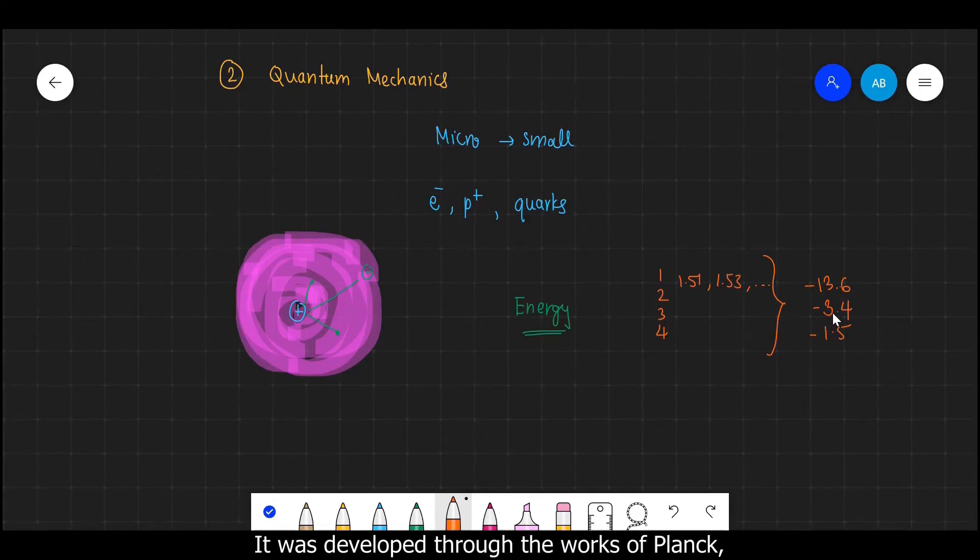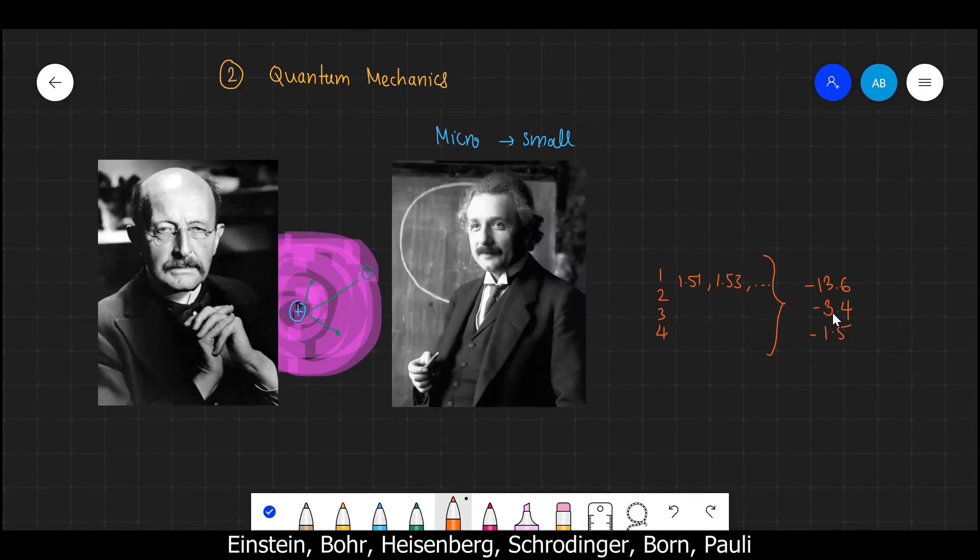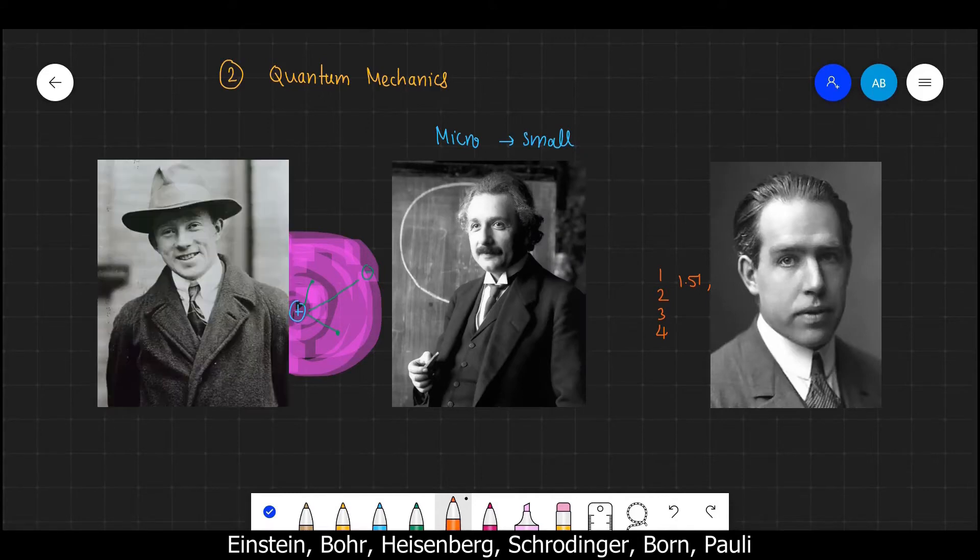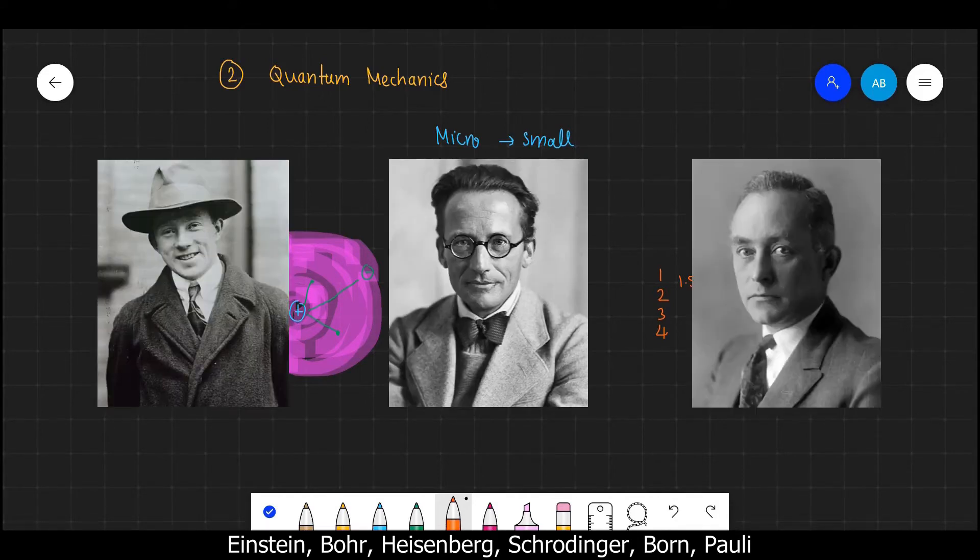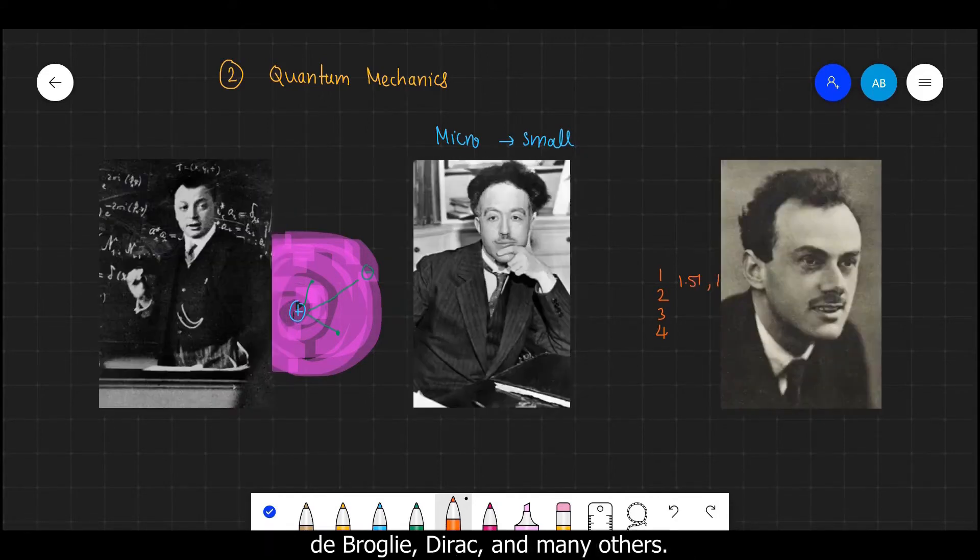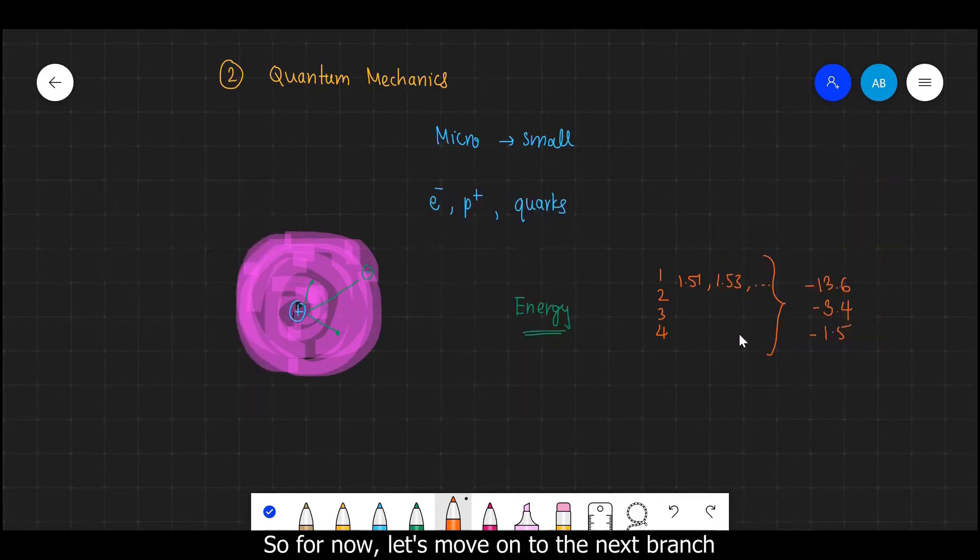So these predictions are not easy to understand, but this branch has one of the most beautiful structures in physics. It was developed through the works of Planck, Einstein, Bohr, Heisenberg, Schrodinger, Born, Pauli, Dirac and many others.